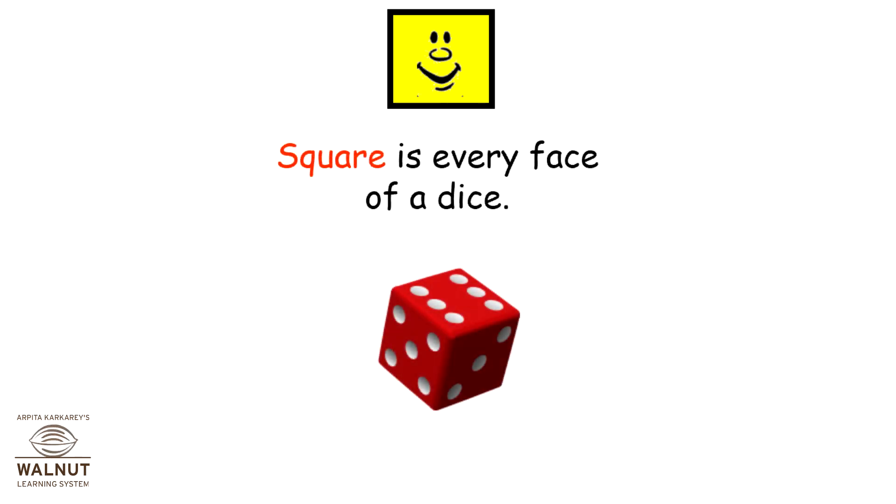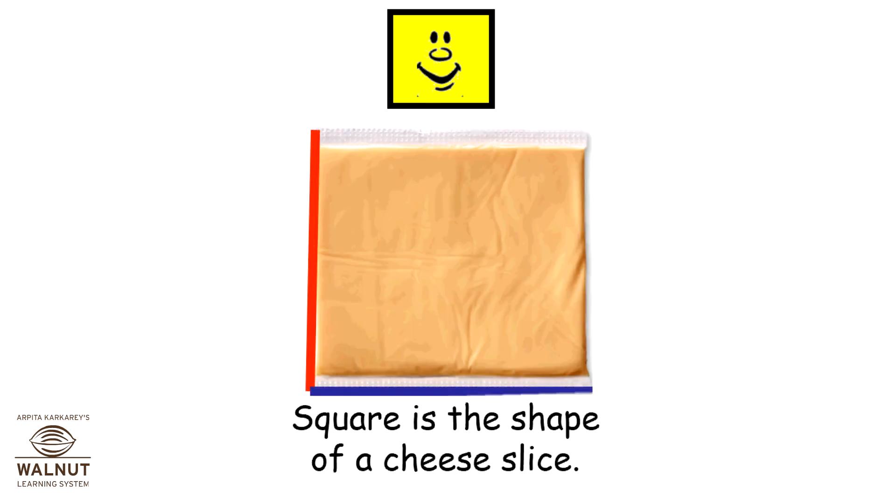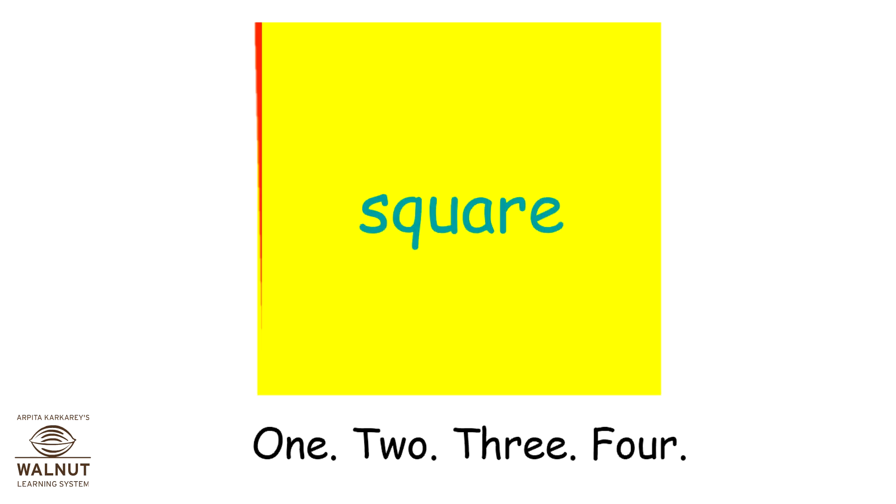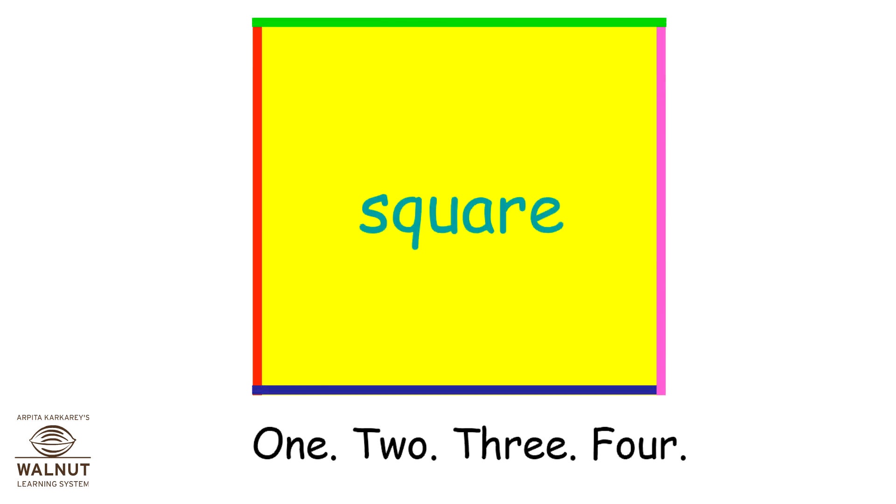Square is every face of a dice. Square is the shape of a cheese slice. One, two, three, four.